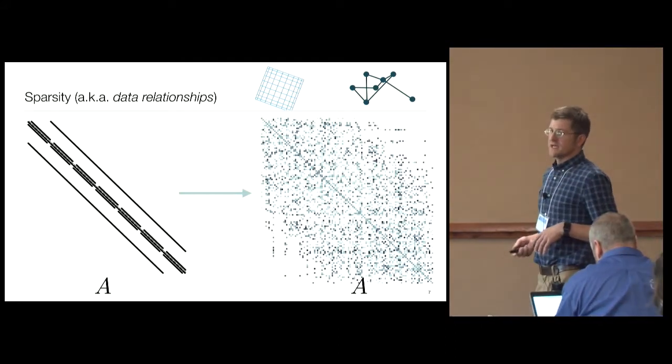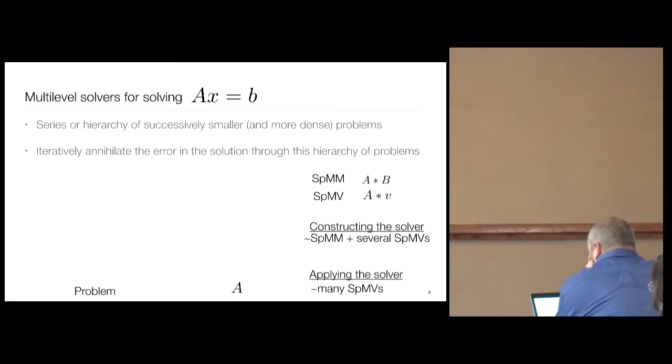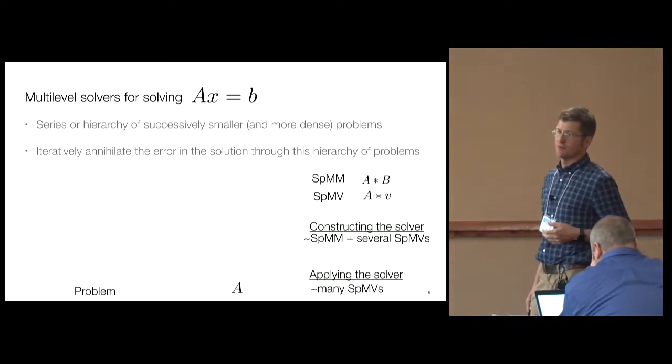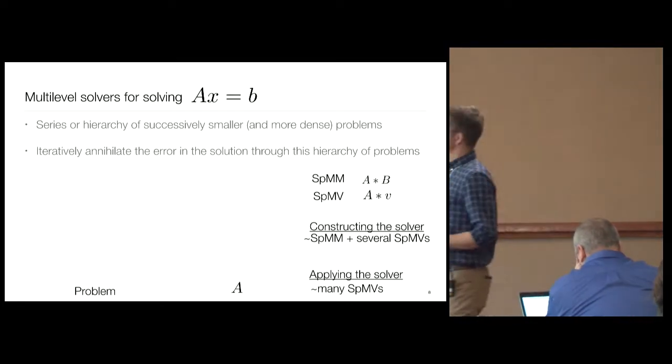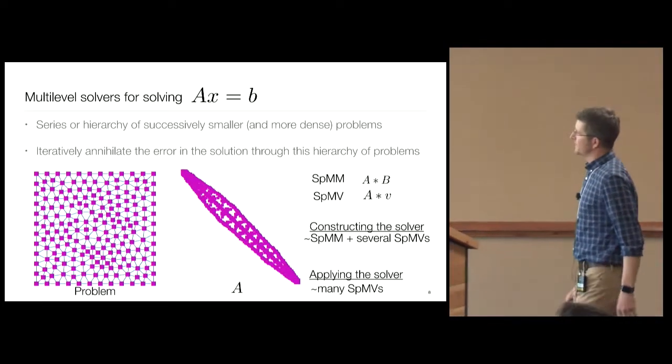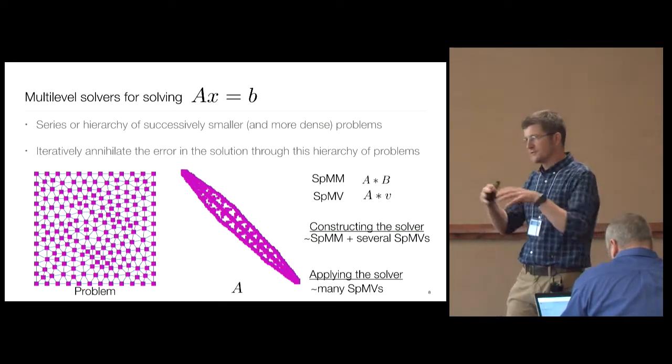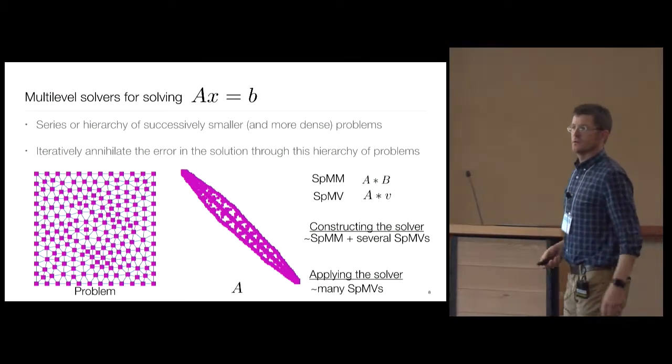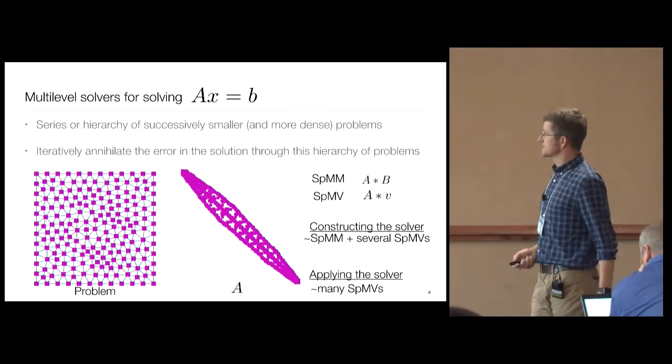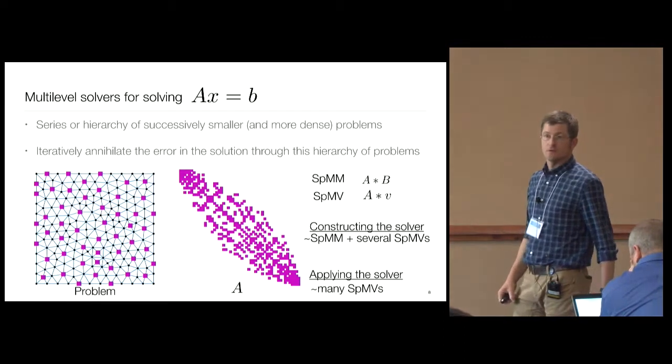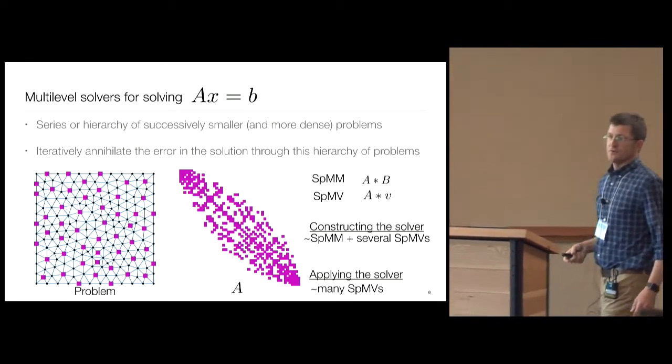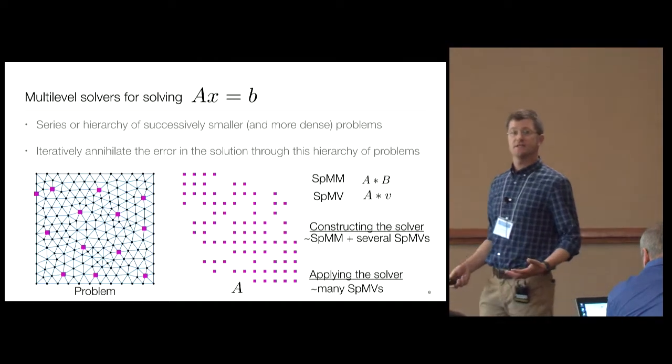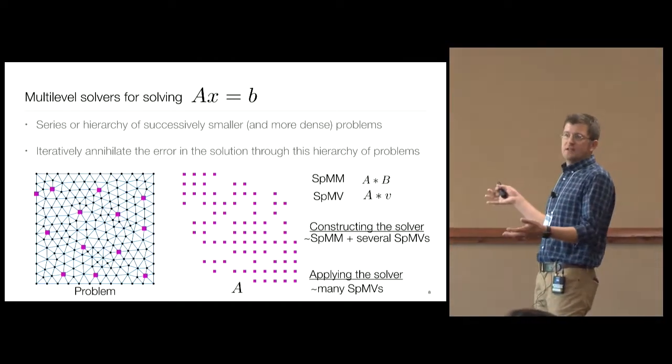We're going to solve this matrix problem AX equals B using something called multigrid. Multigrid uses a series of smaller or successively smaller problems to try to iteratively annihilate the error. The problem looks like this: if we're given a fine problem on the left, there's a mesh and it might be a finite element problem, a global elliptic one. The matrix or data relationship is on the right. We're going to use a coarse representation of that, or a smaller representation, which might look like this one, all of the magenta squares. Look at the data relationship on the right then—it's smaller. And we can keep going: fewer problems or fewer points and a more expansive data relationship, but it's smaller. This is what a multilevel method does.